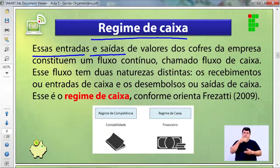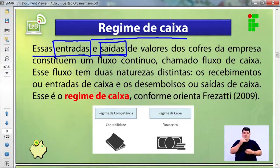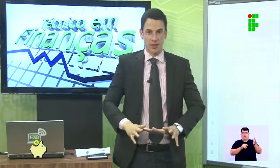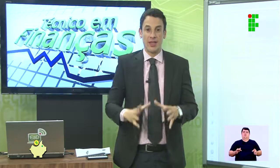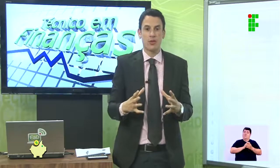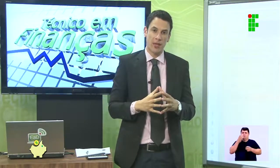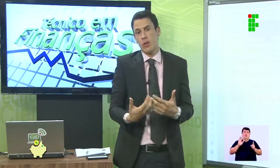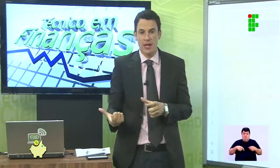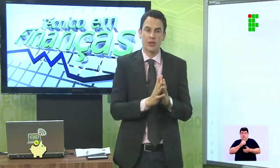Regime de caixa: essas entradas e saídas significam a quantidade de dinheiro que entra e sai da empresa. Isso é algo muito simplista, e a maioria das empresas deixa de fazer. Algumas só percebem que é importante quando já estão endividadas ou já tomaram tudo emprestado que o mercado oferecia — e aí percebem a necessidade de controlar todas as entradas e saídas.